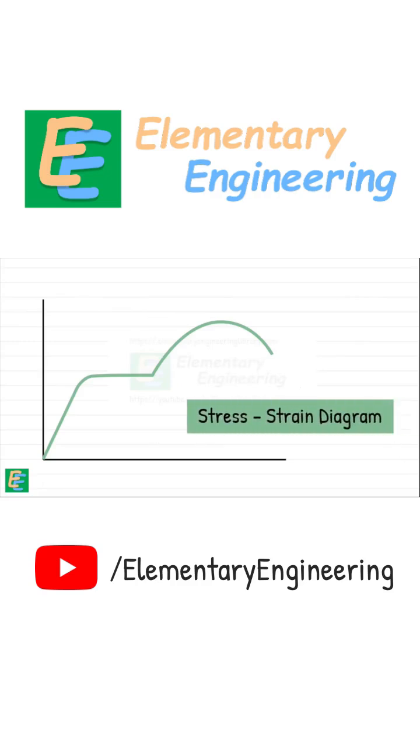This is called a stress-strain diagram. On this graph, the horizontal axis represents strain—how much the material deforms. The vertical axis shows stress, the internal resistance the material develops.